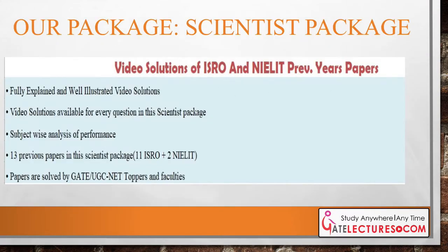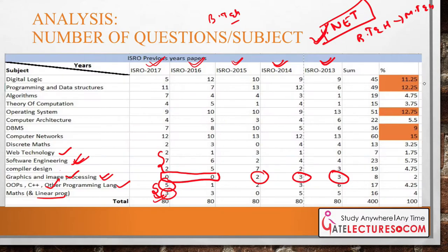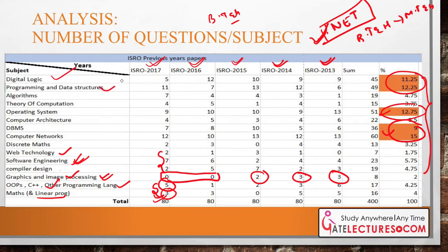Looking at the number of questions asked subject-wise across previous year papers, the maximum focus areas are: digital logic, programming, data structures, theory of computation, computer architecture, and computer networks. These five subjects receive the maximum focus in ISRO examinations.